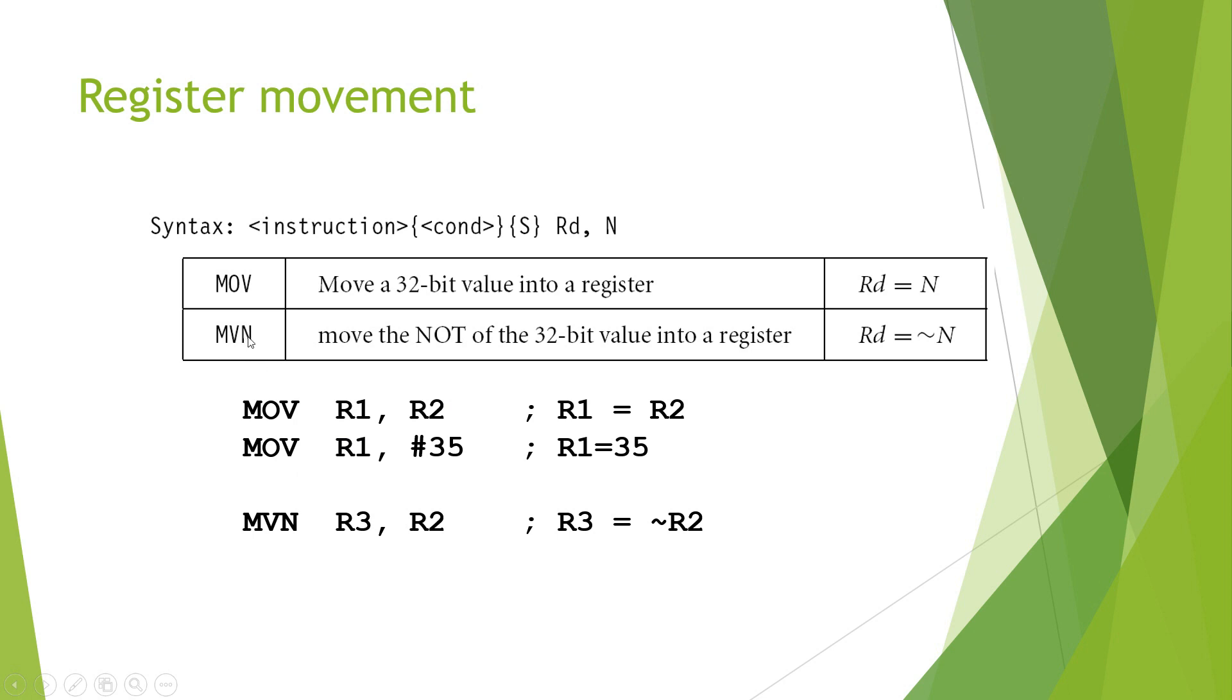MVN is going to store the negate value of the operand that is there. That is, if you specify an instruction as MVN R3, R2, the negate value of R2 is stored in the register R3.